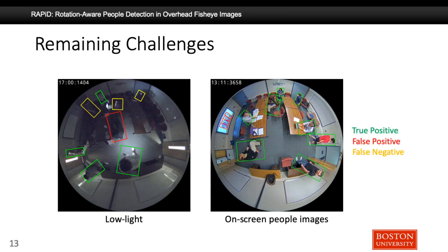Even though RAPID achieves very good overall results, it still fails in some extreme scenarios. In this slide, green boxes show true positives, red boxes show false positives, and yellow boxes show false negatives. The left image shows a low-light scenario from SEPTOF where RAPID misses some people due to low visibility, and there is also an extra false positive detection in the middle region for the same reason. In the right image, people shown on a screen are detected by RAPID but are not annotated in the ground truth, so they are counted as false positives. In most applications, such on-screen people images should be omitted, for example in a people-counting scenario where only people inside the room should be counted.